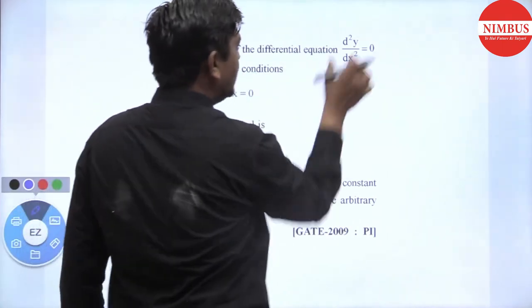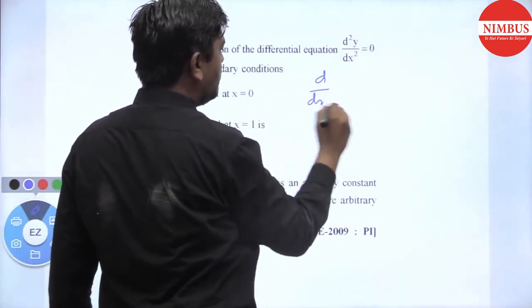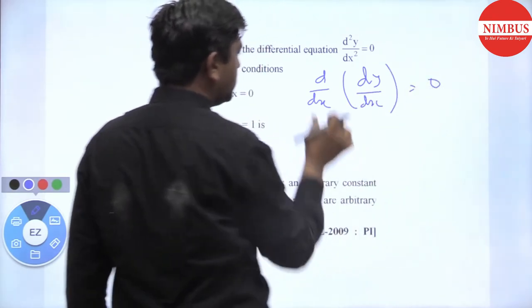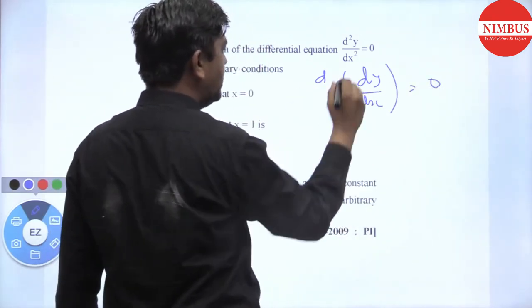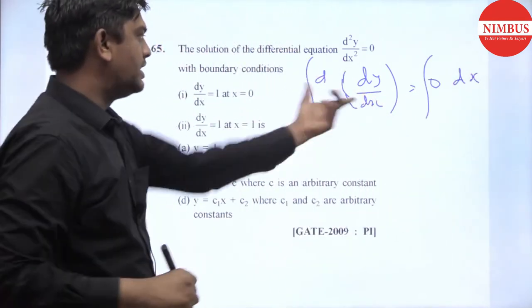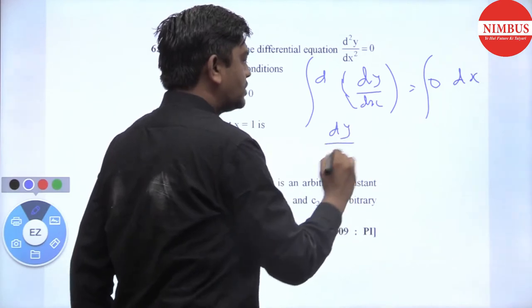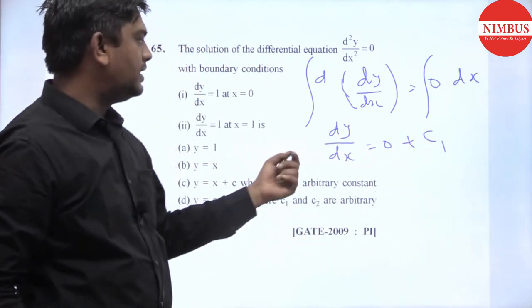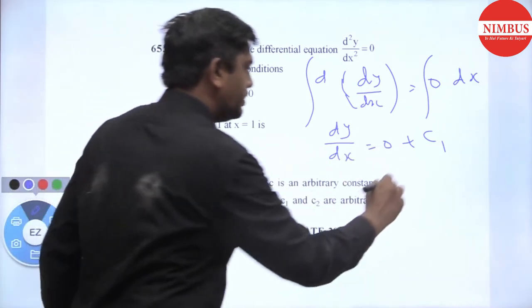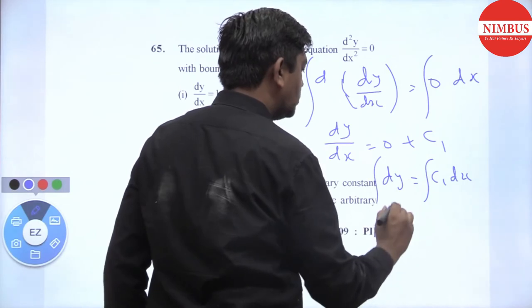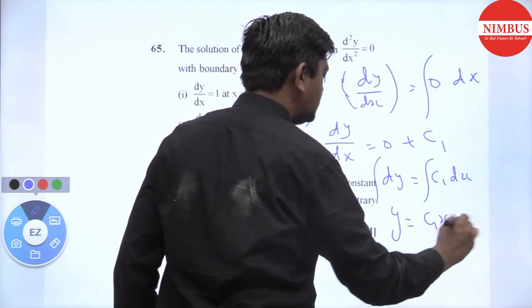This question can be done another way. Let's see: d/dx of dy/dx = 0. Integrate both sides with respect to dx. dy/dx = 0 plus some constant c₁. Again, integrate with respect to dx: y = c₁x + c₂.